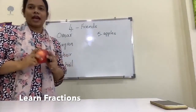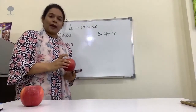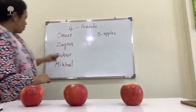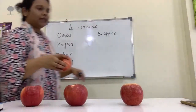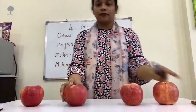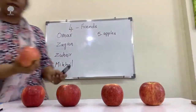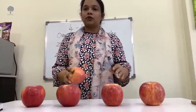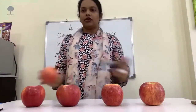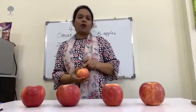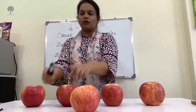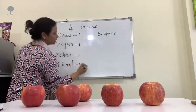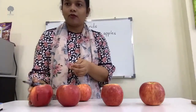I am placing the apples here. I have an apple for Omar, an apple for Zaya, an apple for Zuher, and an apple for Dihael as well. So these are the four apples for the four friends. But I have actually five apples. I distributed four, but they want to eat equally — they don't want to partialize, they want everyone to eat the same amount. I gave one apple to each one, so each one got one whole apple.